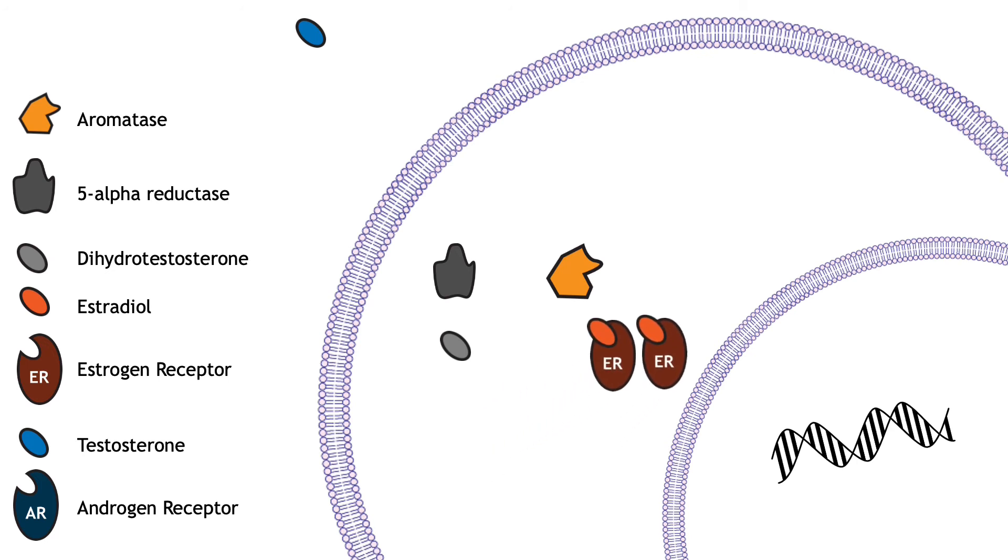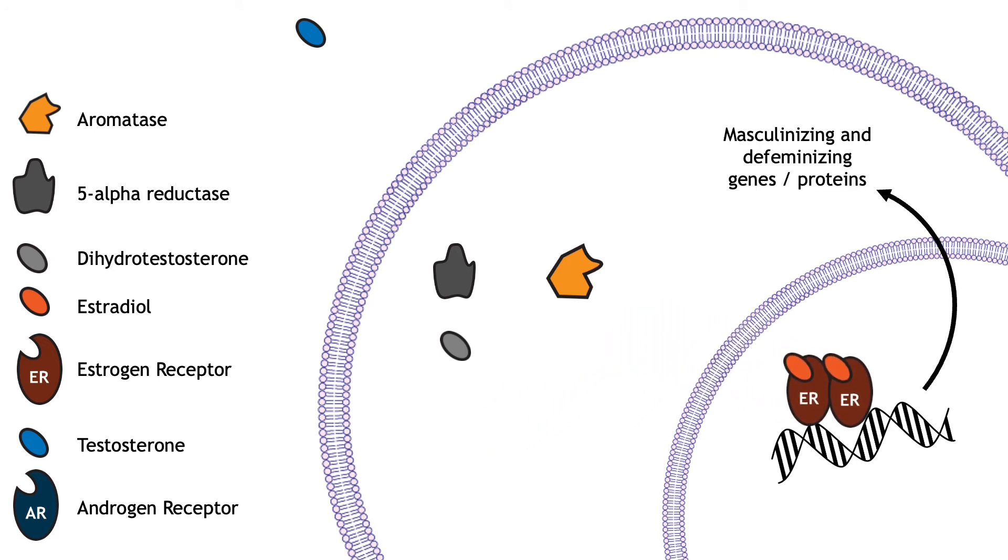The estrogen receptors cause the transcription of masculinizing genes. Therefore, somewhat surprisingly, even though estrogen is typically thought of as a female hormone, its actions during development are responsible for much of the masculinization that occurs in the brain in some animals.